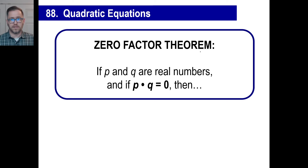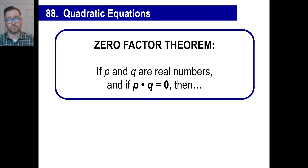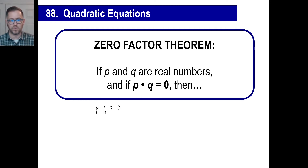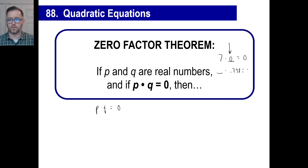The way we solve these is by looking at something called the zero factor theorem. If p and q are real numbers — a real number is a number on the number line — if p times q is equal to zero, think about it. If one number is seven and one is something else, and they multiply together to be zero, what does that number have to be? Zero. And if the first number was something and the second one was 0.798, and that equals zero, what does this number have to be? Zero.